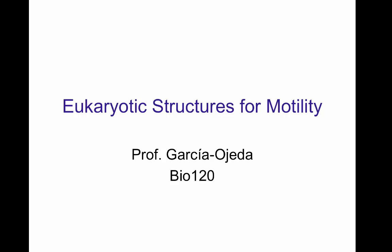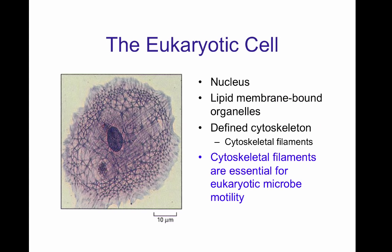This is the second recording of the lecture in eukaryotic structures for motility, lecture number five. What we have here is a eukaryotic cell. Eukaryotic cells are characterized by having a nucleus, lipid membrane-bound organelles, a defined cytoskeleton with cytoskeleton filaments made of actin or microtubules, as well as intermediate filaments.